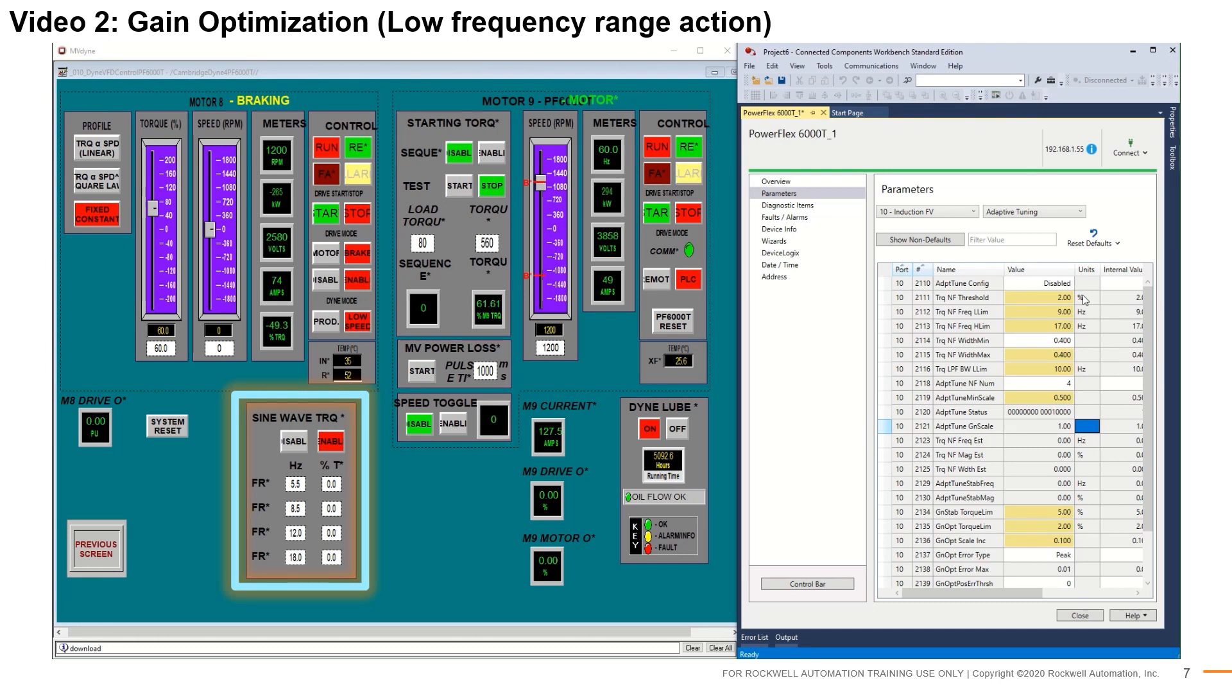Let us move on to adaptive tuning's action in the low frequency range. We will be seeing how the regulator gain scalar changes in response to the presence of low frequency harmonic content. For this demonstration, only one frequency will be injected. Recall that the low frequency limit is set by parameter number 2112. It is currently set to 9 Hz. Adaptive tuning mode shall be set to gain optimization.